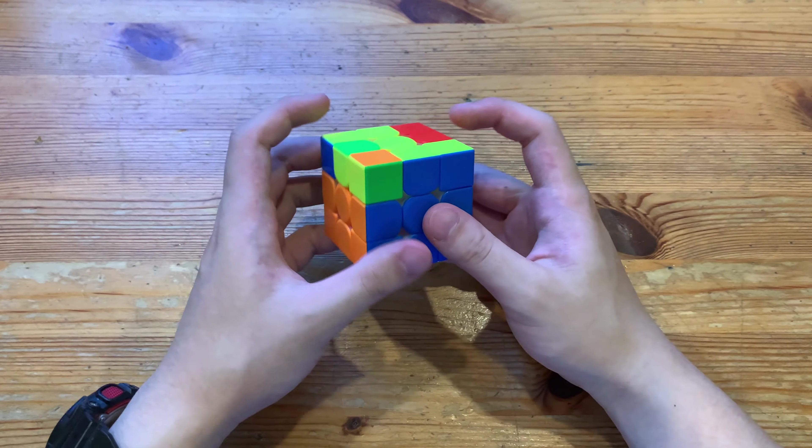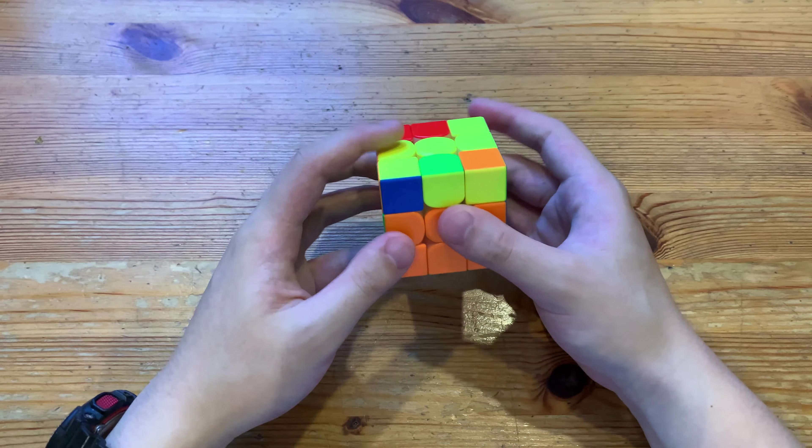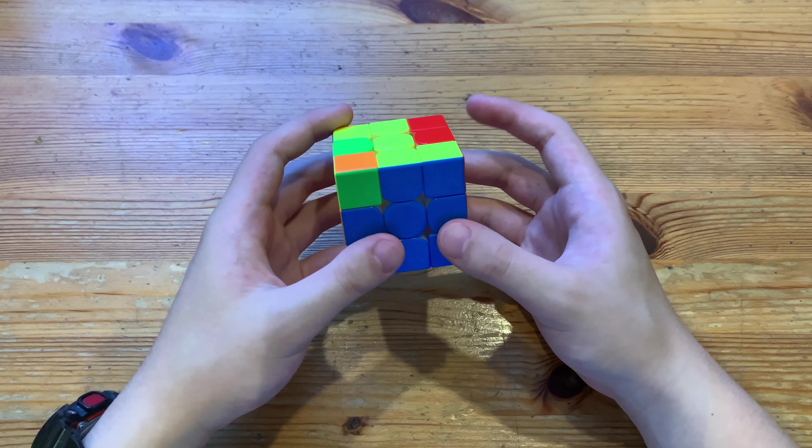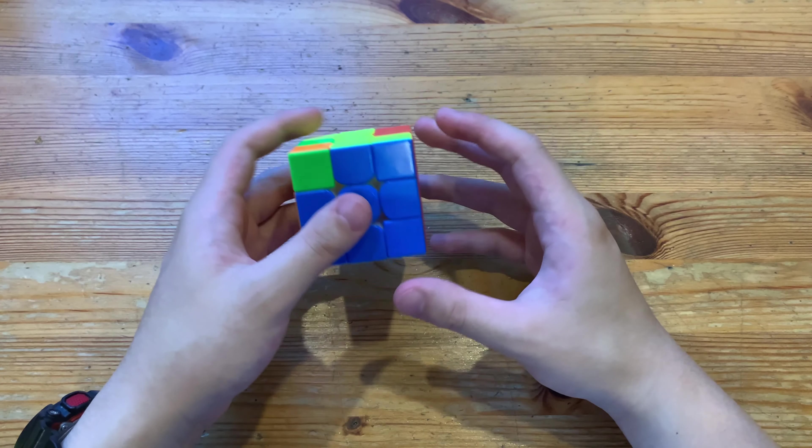And here is the alternative algorithm. It solves this angle, so it might be valuable as an AUF trick, but it's your decision. Personally, I don't use it.